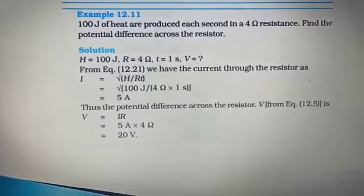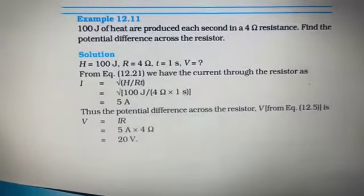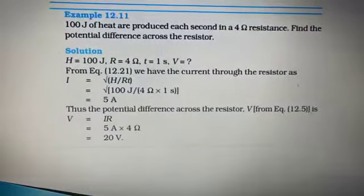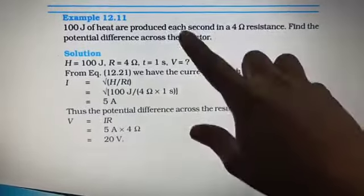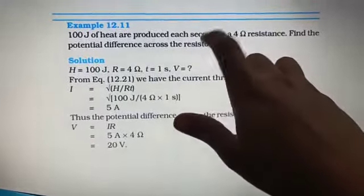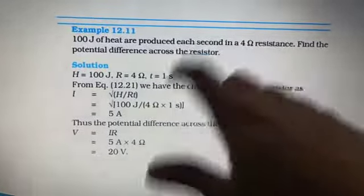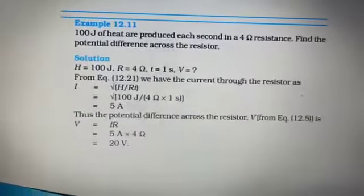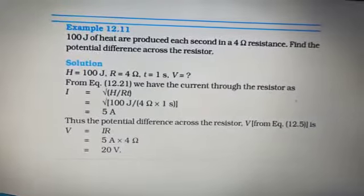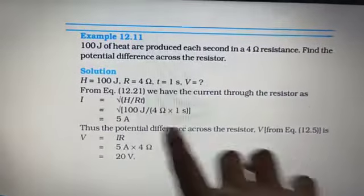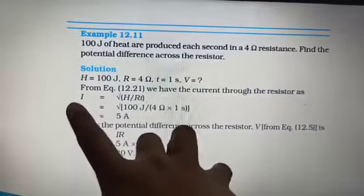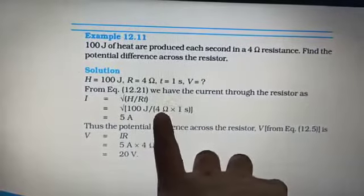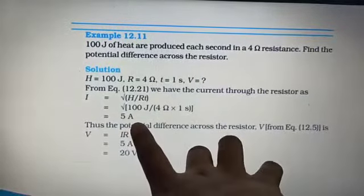The formula is H equals I square RT. You can use that formula first because they are telling in each second. They have given us second as well, time is 1 second. We have H is 100 joules, R is 4 ohm. Using the formula H equals I square RT, we will find out I. I equals root over H by RT, root over 100 by 4 times 1. We get 5 amperes.